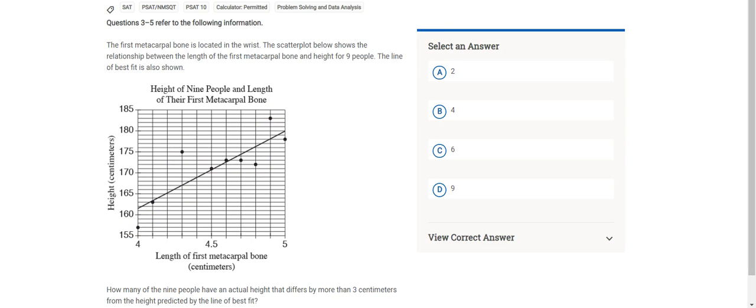So we've got one, two, three, four. Four that differ by more than three centimeters. So that's what they were looking for in the answer to this question, is how many people are more than three centimeters away from the line.